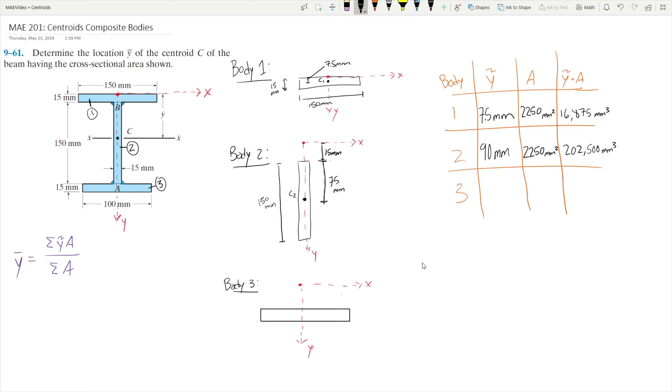Finally, looking at body 3 here, we're going to follow the same steps. The centroid will be half of our height. Since the height of the body is 15mm, we'll have a centroid that is 7.5mm from the top of the body.